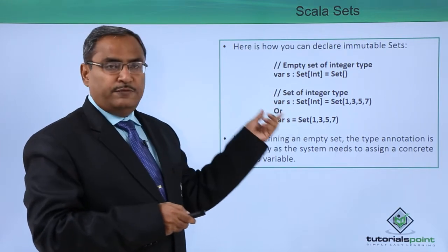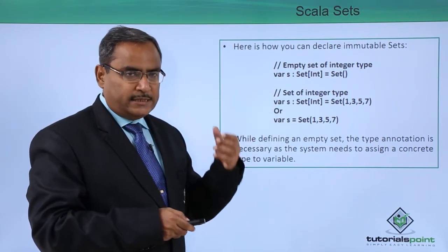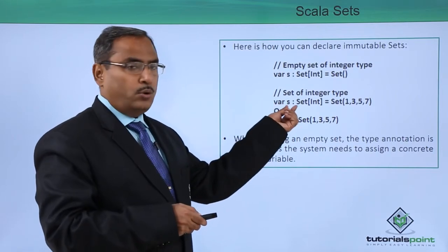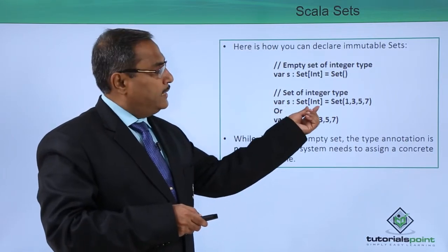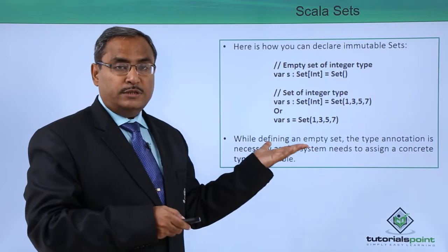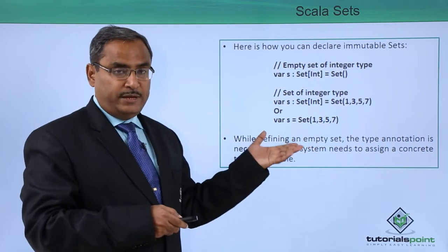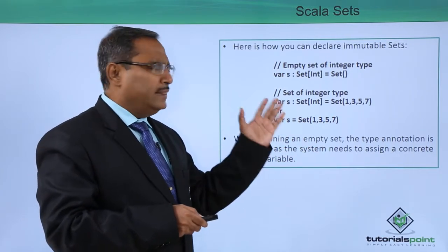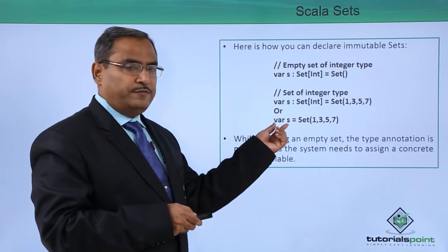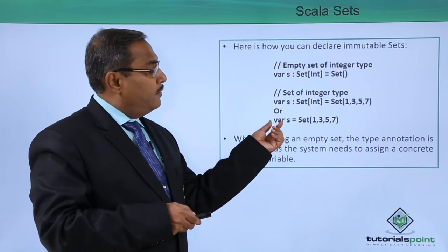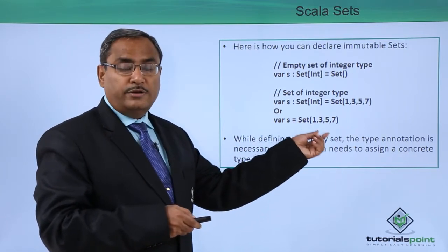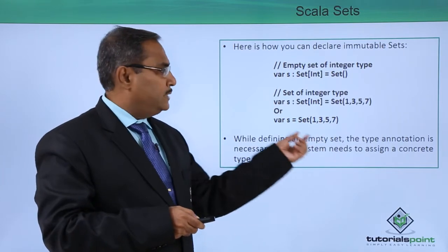In other words, if you want to define one integer set with values, then: var s colon Set[Int] is equal to Set(1, 3, 5, 7). Alternatively, you can define it as var s is equal to Set(1, 3, 5, 7) with values separated by commas. Here, you need not mention colon Set[Int] because we are not defining an empty set.